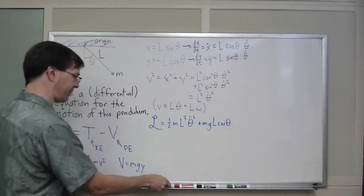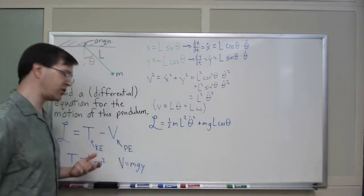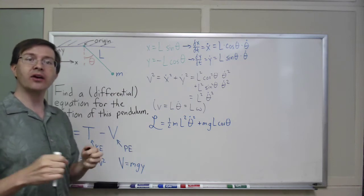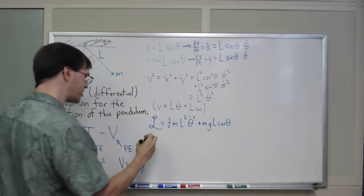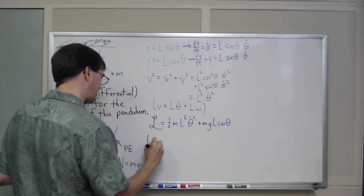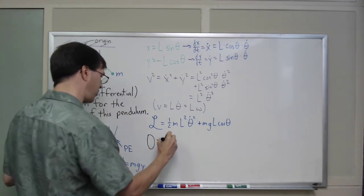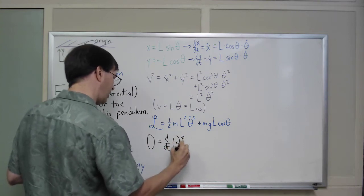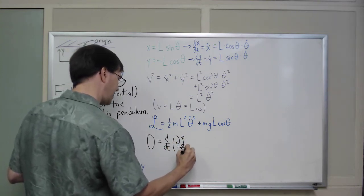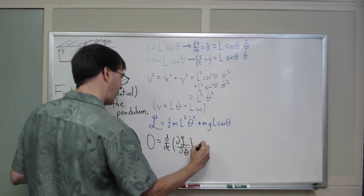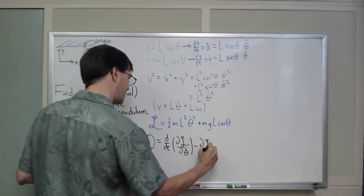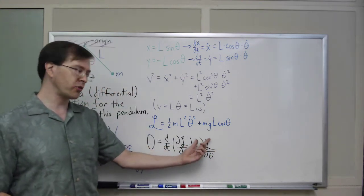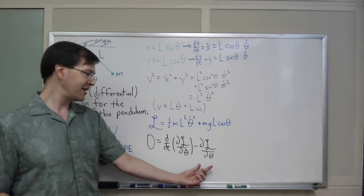And what do I do with it? I mean, I've said that I'm going to use Lagrangian mechanics to do this, but how do I use it? Once I have my Lagrangian written down, I write down the Euler-Lagrange equations. And the Euler-Lagrange equations say that this whole thing equals zero, d by dt of dL d theta dot.